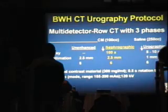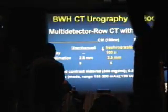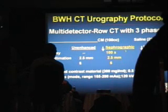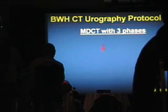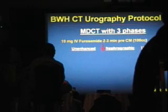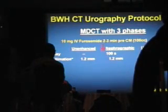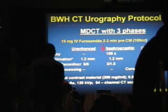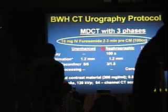Our CT urogram protocol uses three phases: unenhanced, nephrographic, and urographic. We use 2.5 mm collimation, a pitch of 6, and recently have been using Lasix to help in evaluating the urographic phase. We reconstruct images at 3 by 1.5 mm during the nephrographic phase. Using 3 by 1.5 mm sections, you can evaluate really small masses and characterize cysts as small as 5 mm.